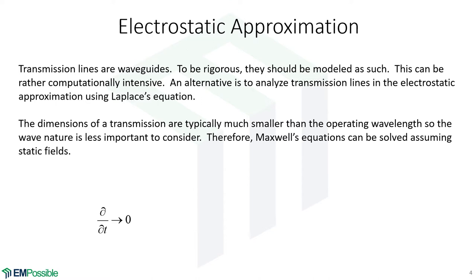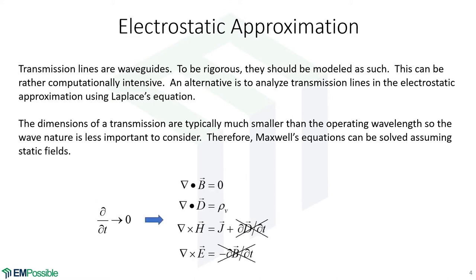Most transmission lines have pretty low loss and are only propagating signals a few inches over a circuit board. If we wanted to analyze transmission lines carrying signals for many kilometers, we'd need to account for loss. But for designing circuits, an electrostatic approximation is very good. So we're going to set the time derivative equal to zero in Maxwell's equations, and when we do that, those terms cancel and we end up with a much simplified version of Maxwell's equations.